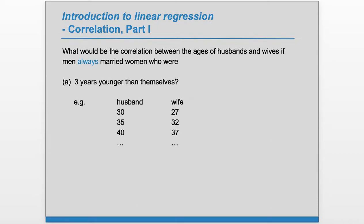if the husband is 30, the wife would be 27. If the husband is 35, the wife would be 32. So we can see that as one goes up, the other also goes up as opposed to down. So this is positive correlation.